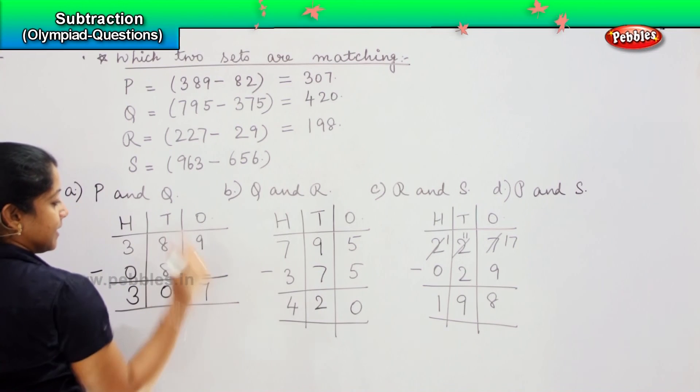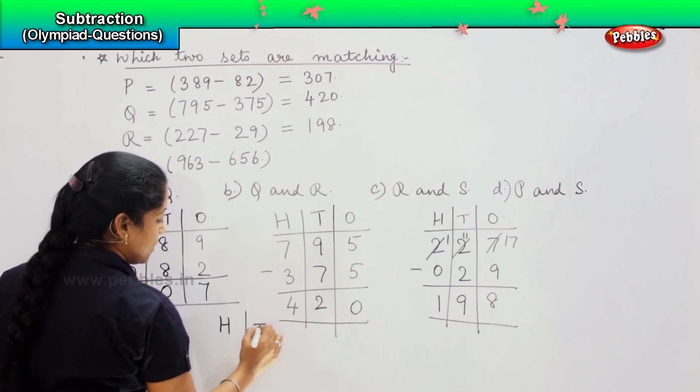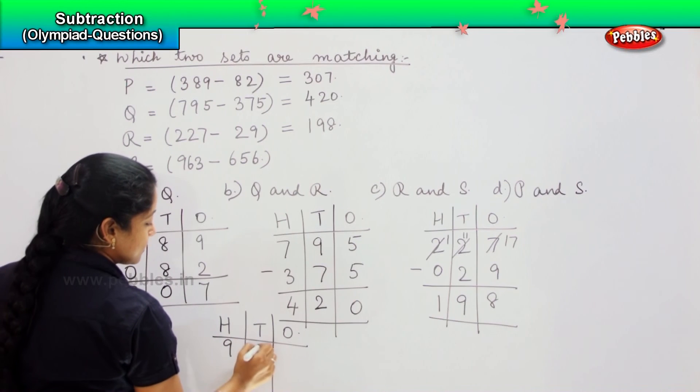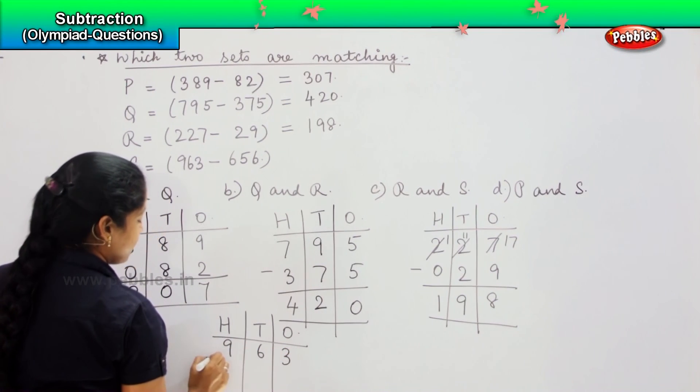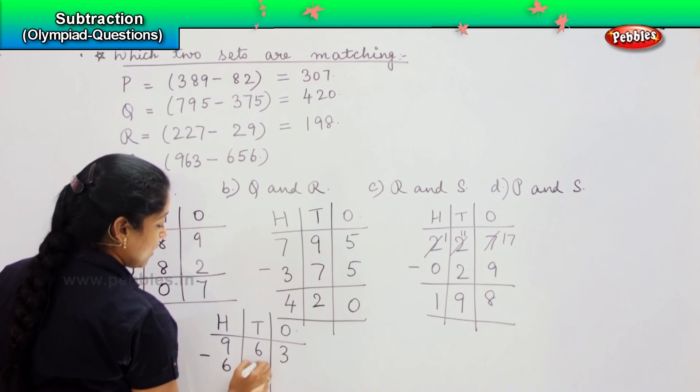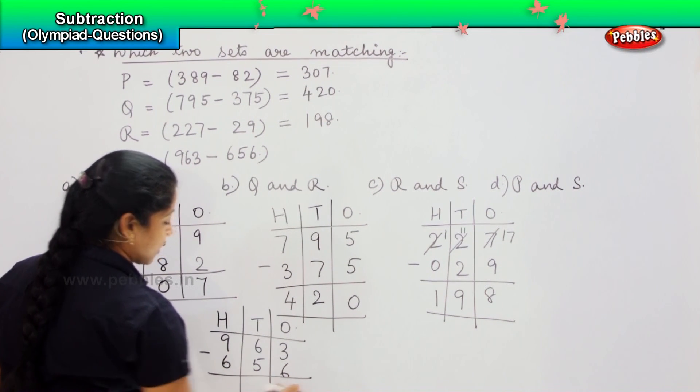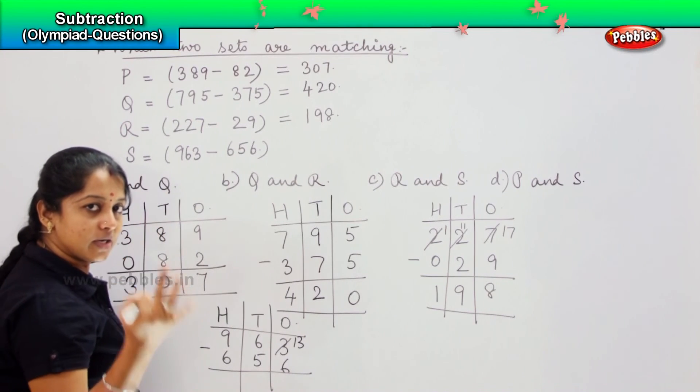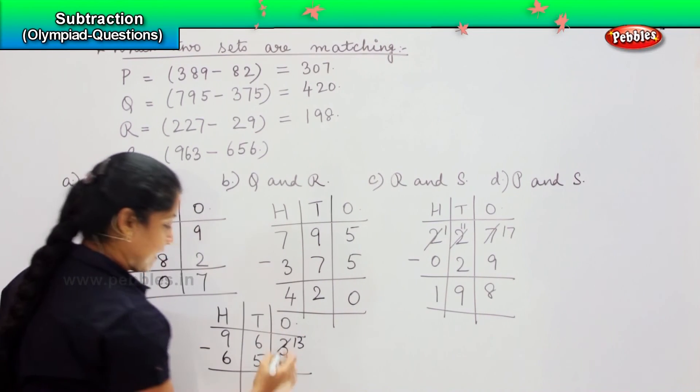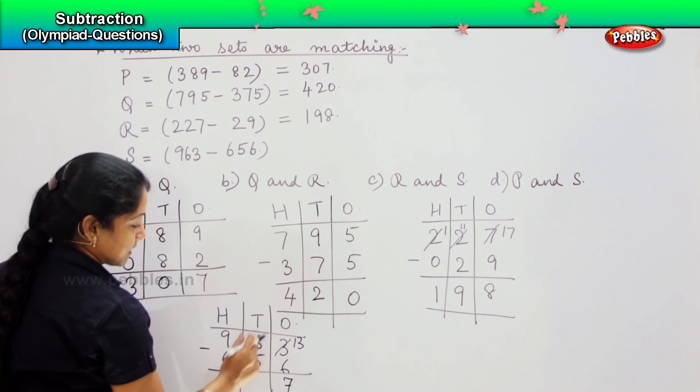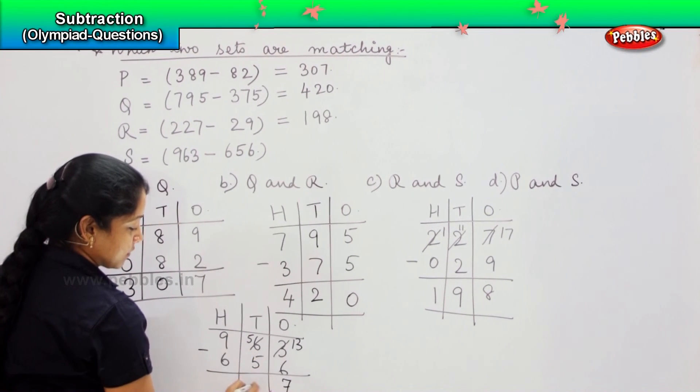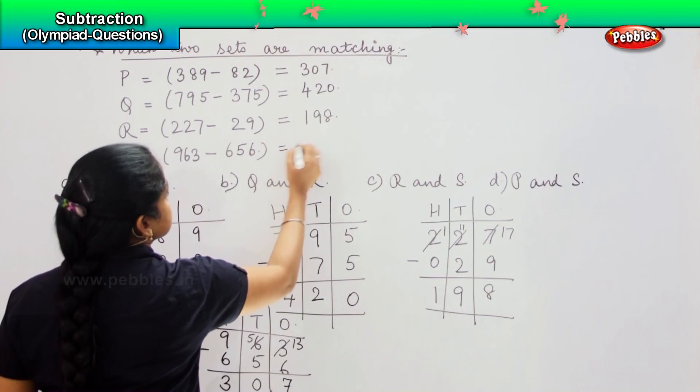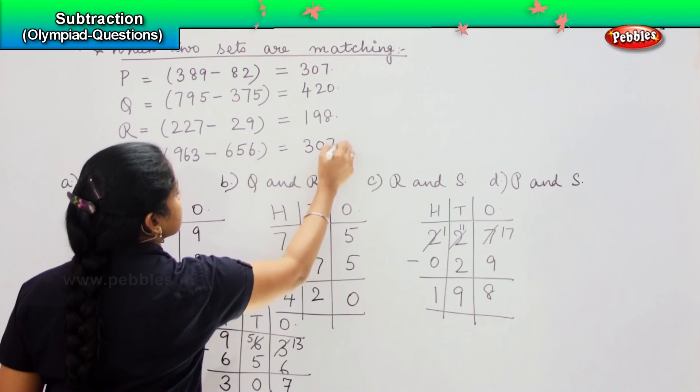Coming to the last one, H, T, O. It says 963 minus 656. Again 13 minus 6 is 7. This has given 1, so it becomes minus 1. So 5 minus 5 is 0 and 9 minus 6 is 3. So the answer is 307.